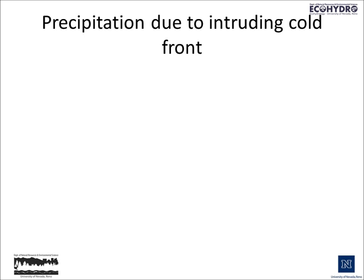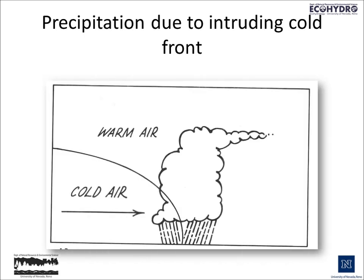We may also have precipitation due to an intruding cold front. Here, a more dense air mass intrudes upon a less dense air mass, pushing the warm air upward, causing the rise of warm air parcels, and then because of the resulting cooling — and if there are condensation nuclei present — causing condensation and the release of precipitation, as the warm air front is essentially forced to rise by the intrusion of the cold air front.